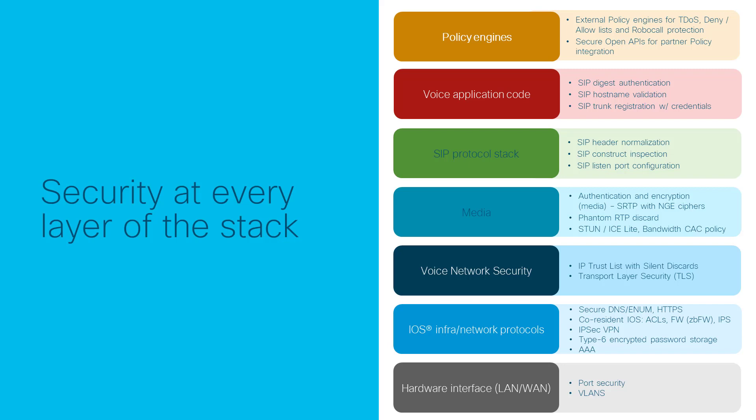Cube runs as an application on a router which provides the capability to secure traffic at multiple layers. As a session border controller or SBC, it provides critical network security for VoIP services. It effectively hides and protects core UC elements. Cube is the ingress and egress point for all signaling messages and media streams.